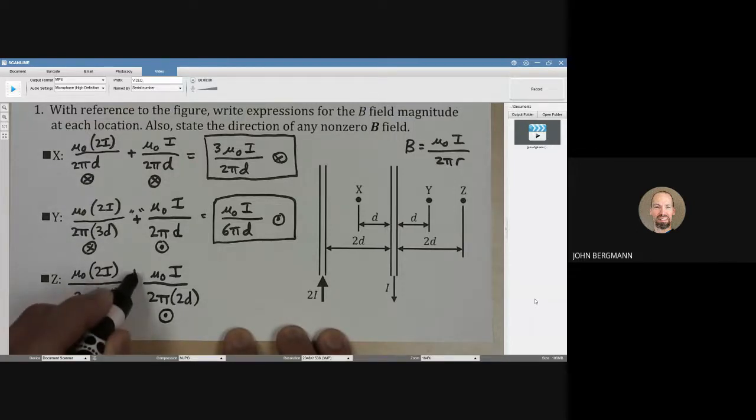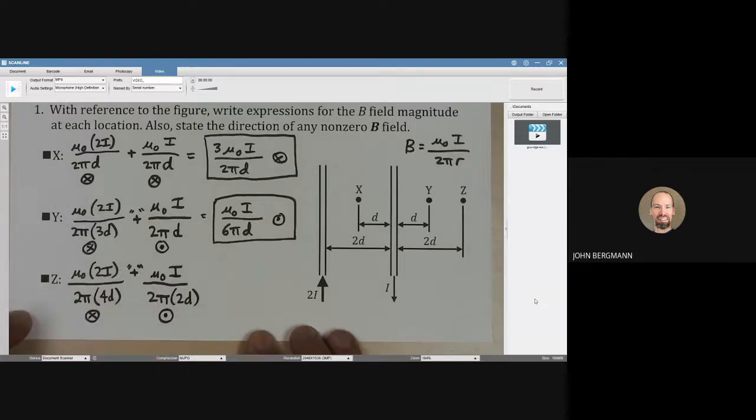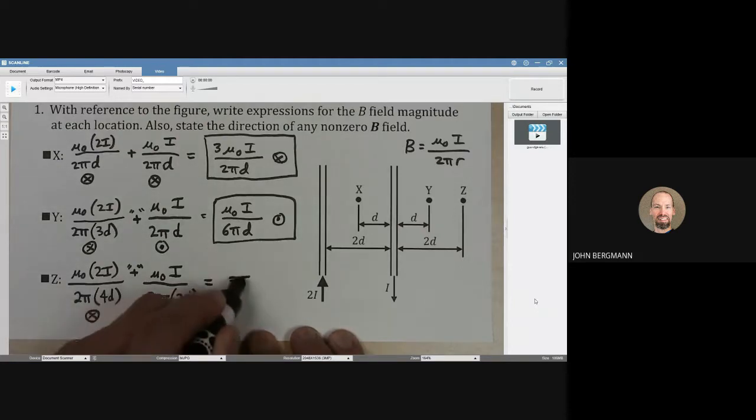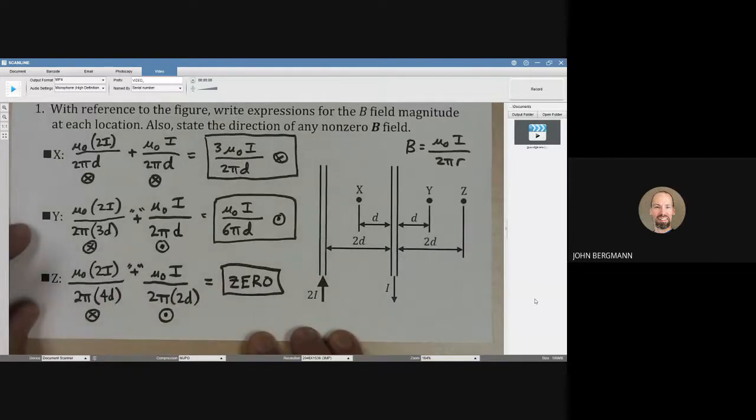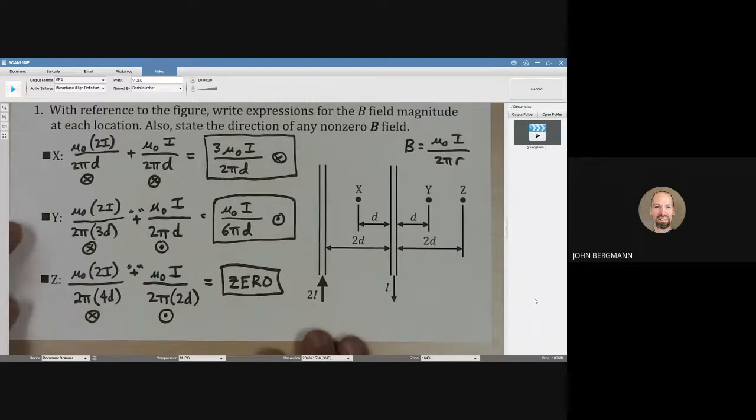So again, we're going to have to consider those. What does that give us? I'm seeing one-fourth in one direction and one-fourth in the other direction. Looks to be zero to me. At location z, the magnetic field is zero. That's how you do it. You use superposition.